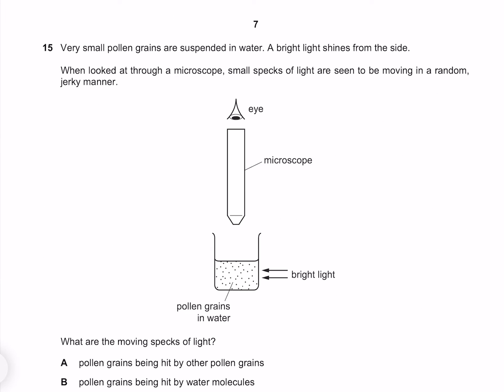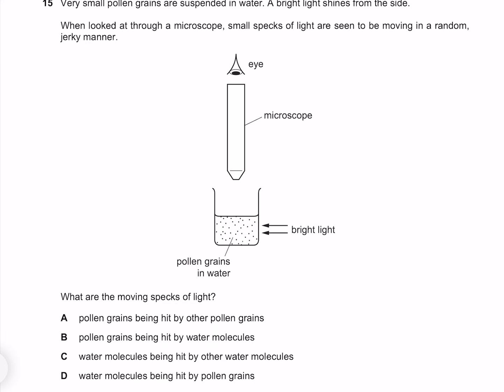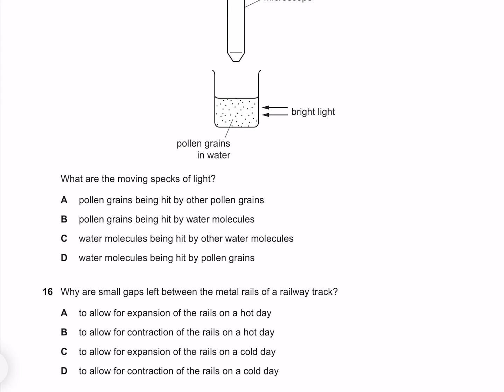Very small pollen grains are suspended in water. A bright light shines from the side. When looked at through a microscope, small specks of light are seen to be moving in a random jerky manner. What are the moving specks of light? Our sources of light are the reflections from the pollen grains, which are moving because they are being hit by water molecules. So our answer must be B.